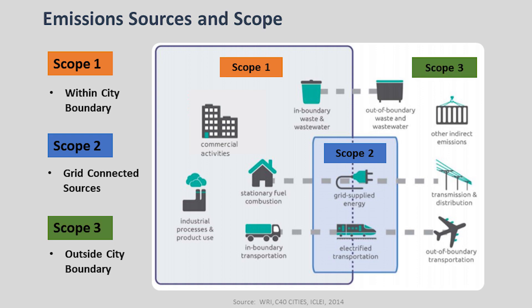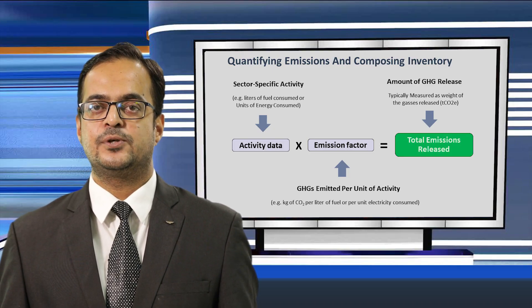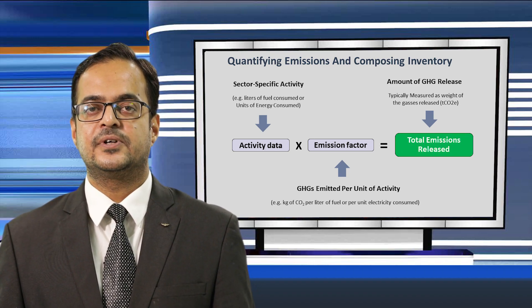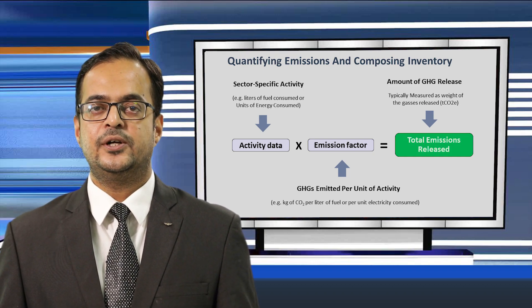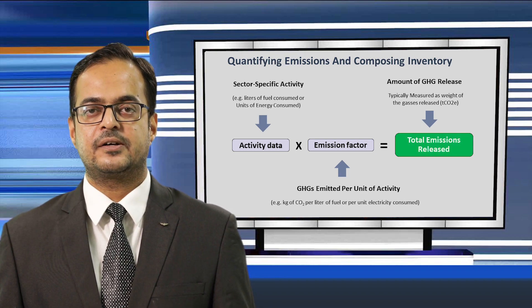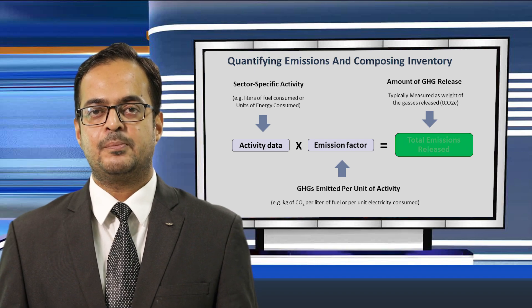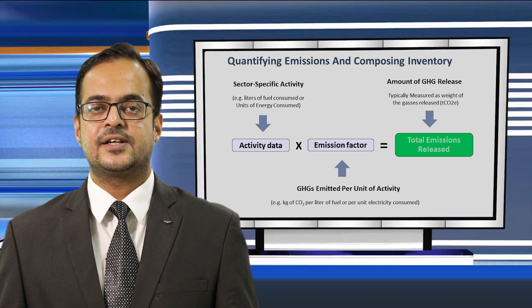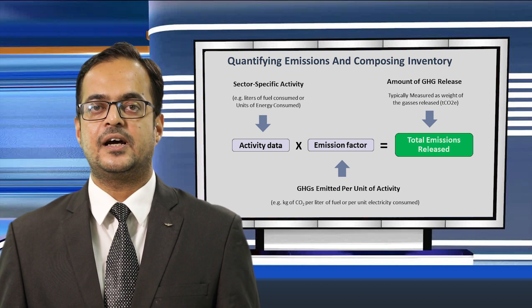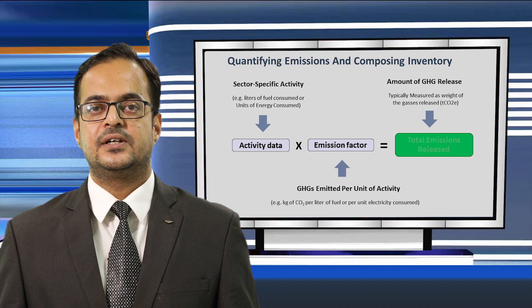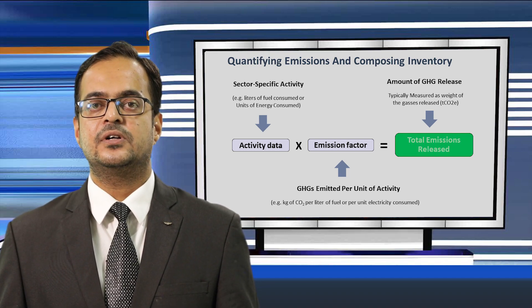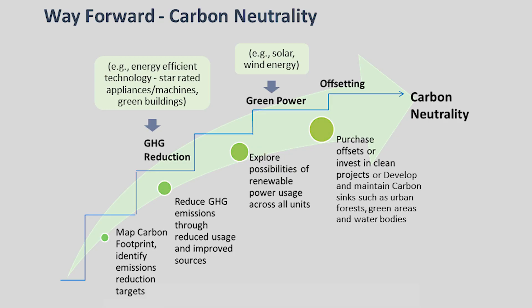The next step is quantification of emissions from these sources. Activity data multiplied by an emission factor gives you total emissions. The activity data comprises a quantitative measurement of consumption. For instance, to calculate emissions from electricity, you need the total units of electricity consumed in a household — that is your activity data. You then multiply this by an emission factor; in India, the Central Electricity Authority calculates the emission factor for electricity as 0.82. This gives you tons of CO2 equivalent, which is the unit for total greenhouse gas emissions.